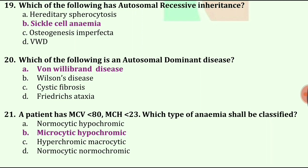A patient has MCV less than 80 and MCH less than 23. Which type of anemia shall be classified? The answer is microcytic hypochromic anemia.